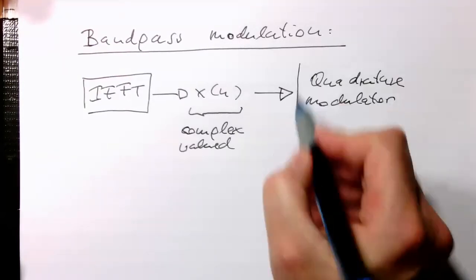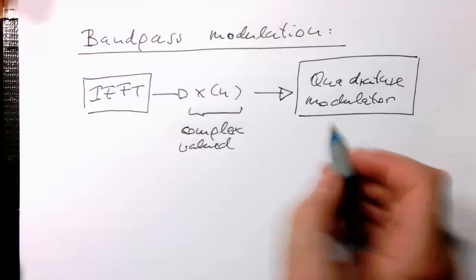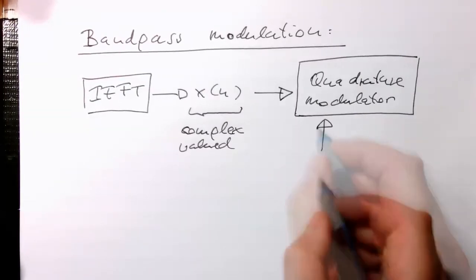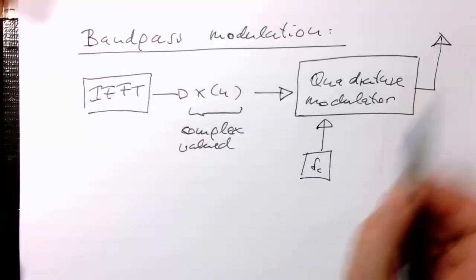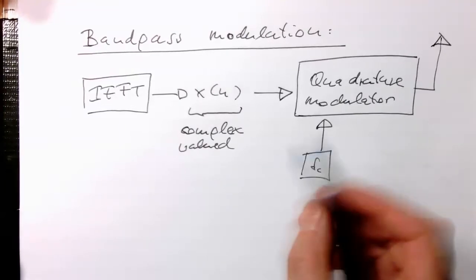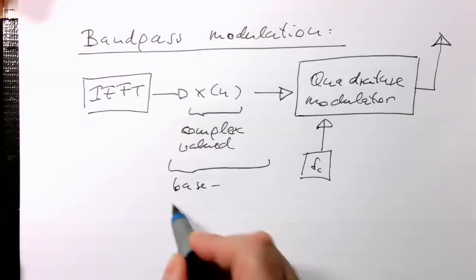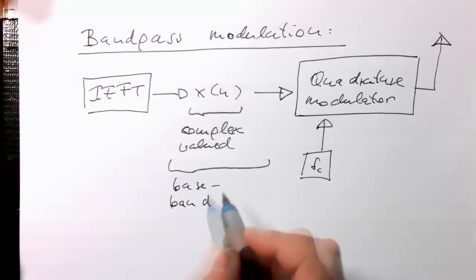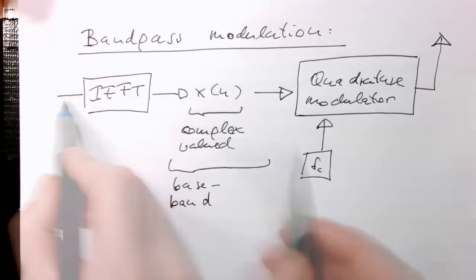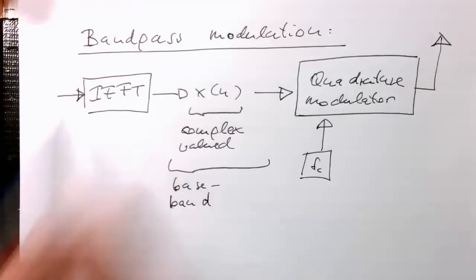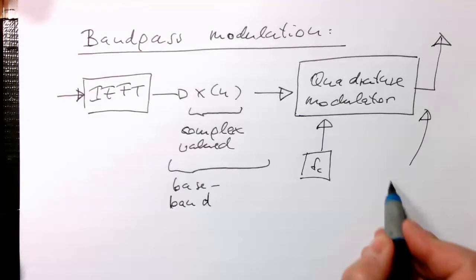Remember, the quadrature modulator takes these complex values and multiplies them with a carrier frequency. Then after that we can transmit it. The quadrature modulator transforms this baseband signal. We've defined the bandwidth of the baseband with the help of our frequency coefficients, the number we're actually using and not setting to zero. What's coming out here is a bandpass modulated signal.